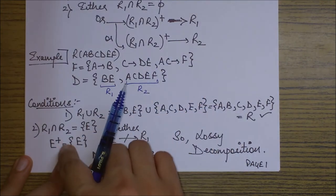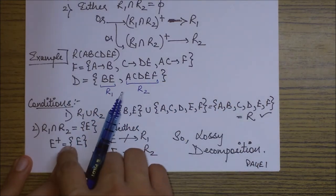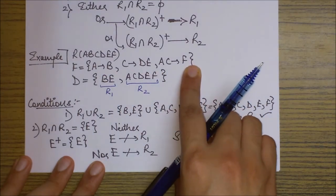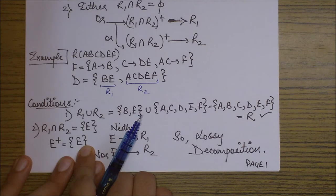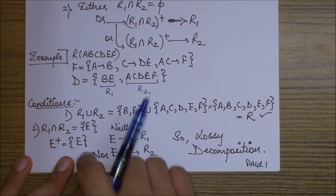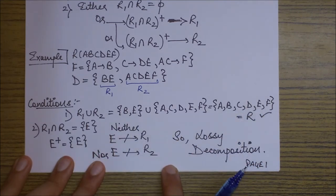That means its closure should determine either R1 or R2. But if we find E closure from this functional dependency set, we get to know that we are able to reach only this E. There is no other attribute that I can reach from this E. That means it is neither able to determine R1 nor it is able to determine R2. That means it is a lossy decomposition.